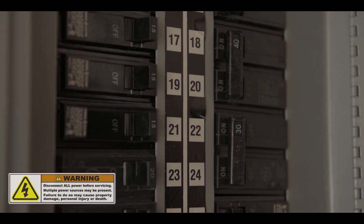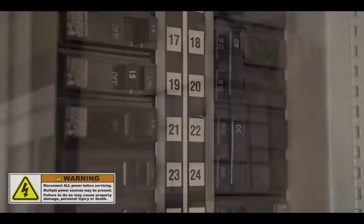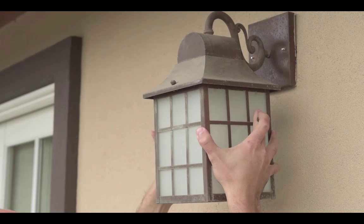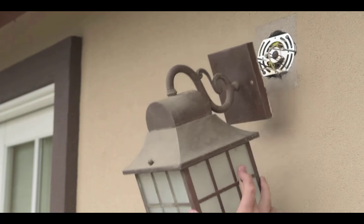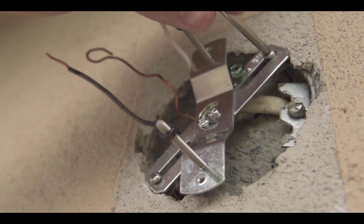The first step is to locate your home's breaker box and cut power to the circuit that supplies the outdoor light we'll be replacing. After you check that your light is no longer receiving power, it's safe to remove and install your mounting bracket.